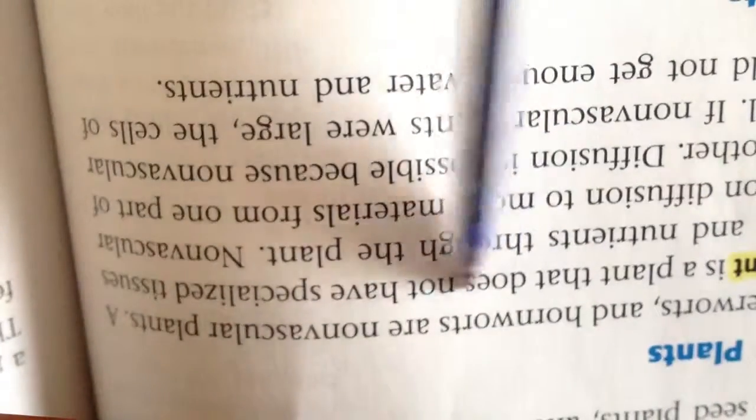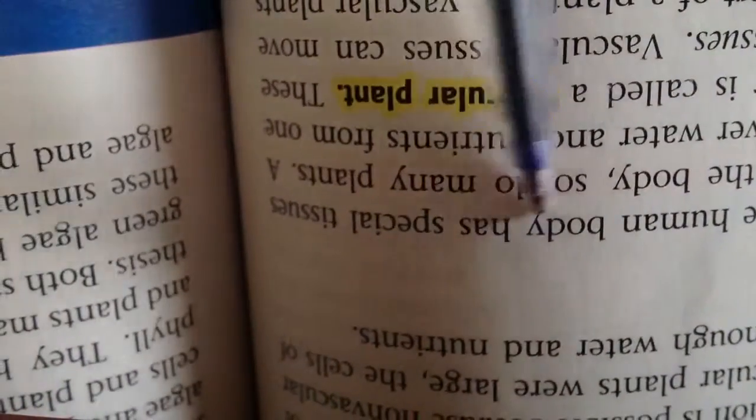A nonvascular plant is a plant that does not have a specialized tissue. They don't have, but you see here vascular plant has special tissue to move materials throughout the body, but here doesn't have, does not have.